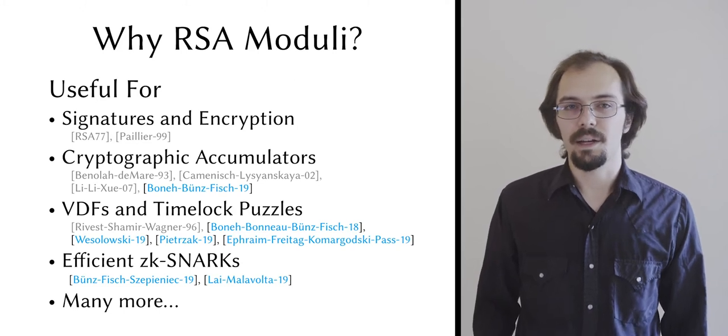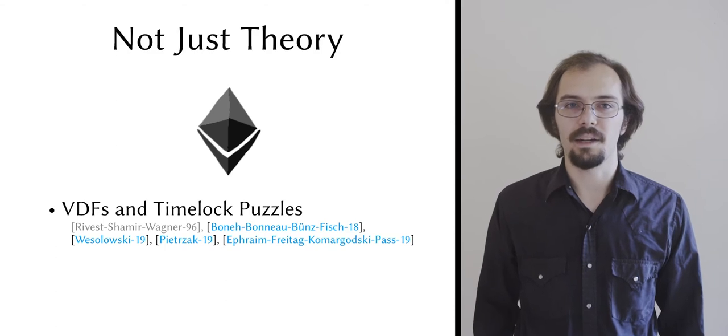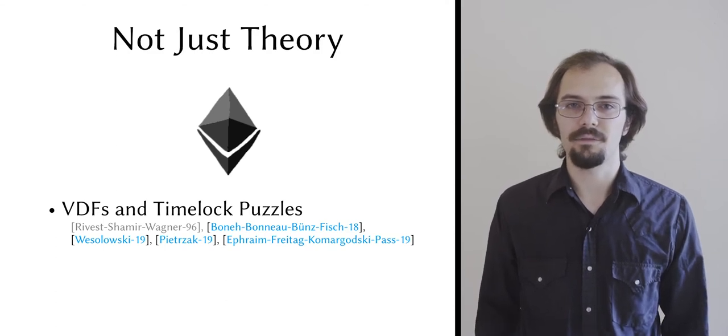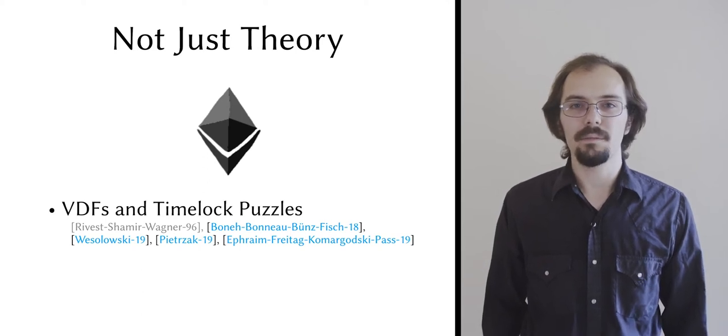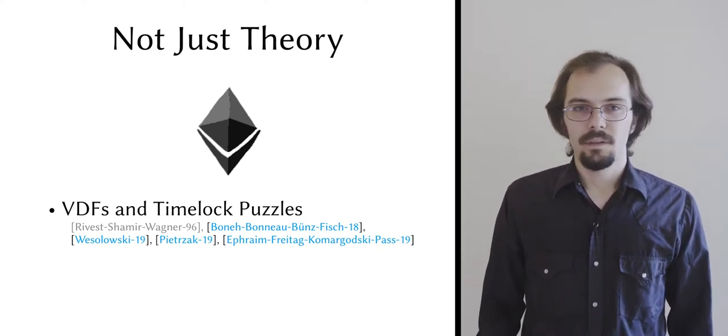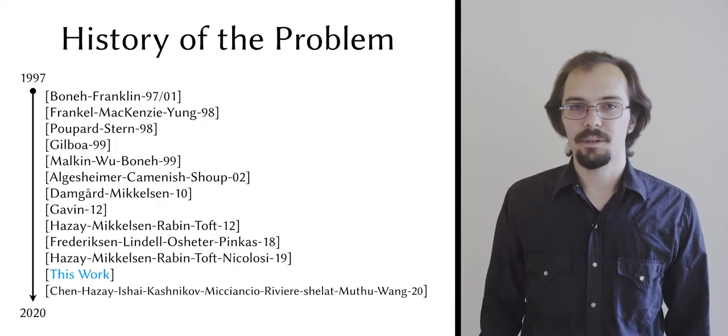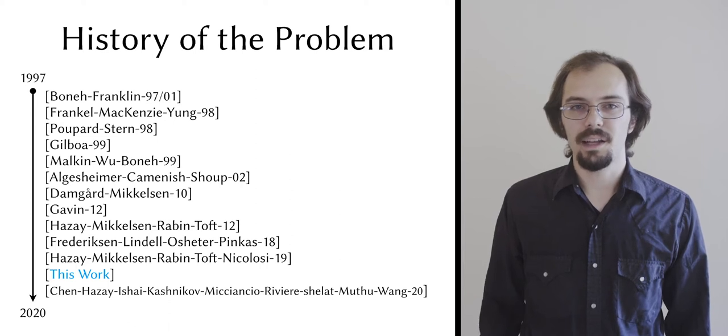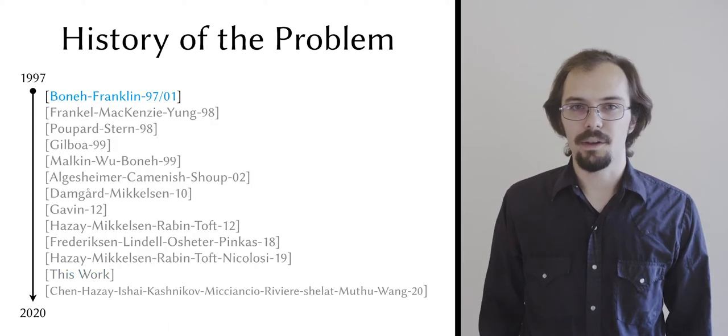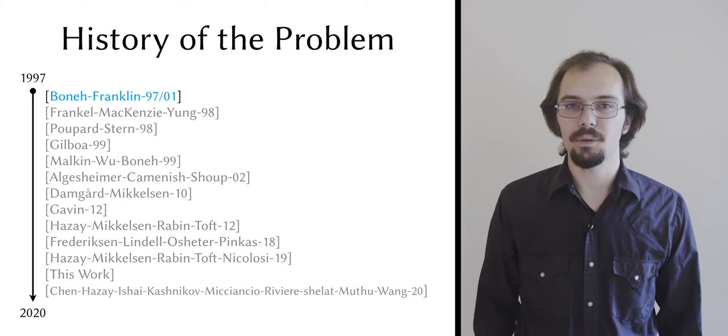This isn't merely a theoretical concern, by the way. The Ethereum Foundation has publicly announced an intention to migrate to RSA-based verifiable delay functions, which means that they need secure biprime sampling in the real world, and they need it to be efficient for many parties. It's not surprising to find that the history of secure biprime sampling mirrors the history of its applications—a great deal of initial interest and a recent resurgence. Boneh and Franklin wrote the seminal paper on the subject in 1997, and pretty much all of the subsequent works follow their basic layout, including ours.